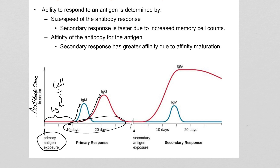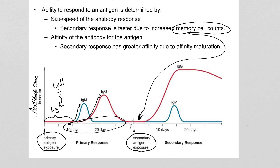If you're exposed to the same antigen again — same virus, same bacteria — notice that this lag phase is much shorter now. Instead of being around 10 days like in the first exposure, we're down to only a couple of days at the most. The reason for that is you have memory cells — memory B cells and T cells that are sitting around waiting to divide — so you can produce antibodies much faster. This means the second time you're exposed, you technically still get an infection, but because you can produce an antibody response that quickly, you crush the infection before it becomes bad enough to actually give you symptoms.